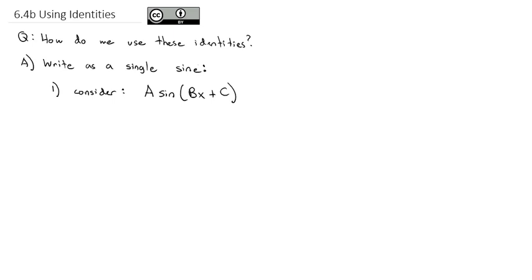In this expression a·sin(bx + c), we would know what a, b, and c are — think of a, b, and c as numbers. The only real unknown is x. So a is out in front of everything, and what we have is the sine of a sum.